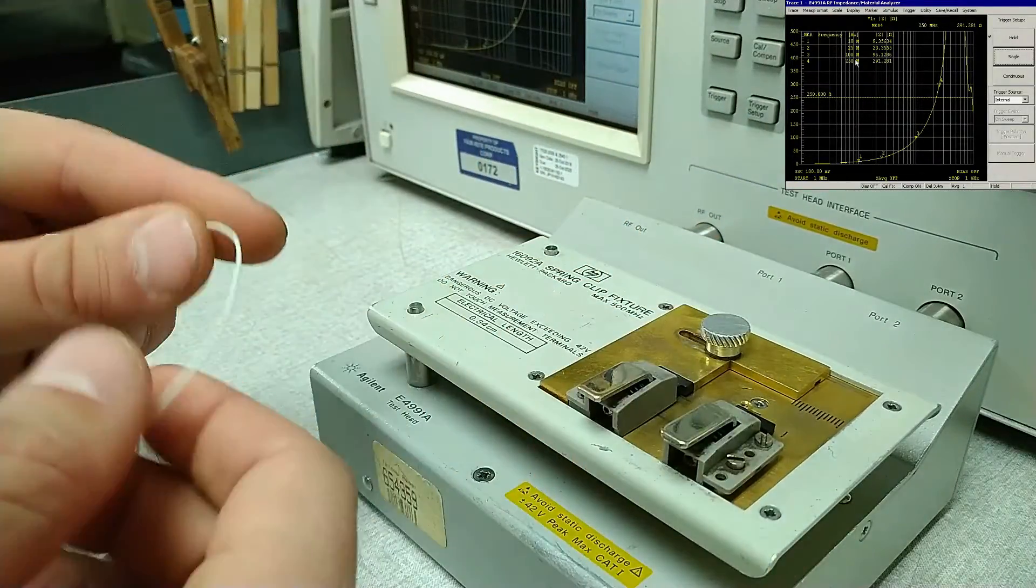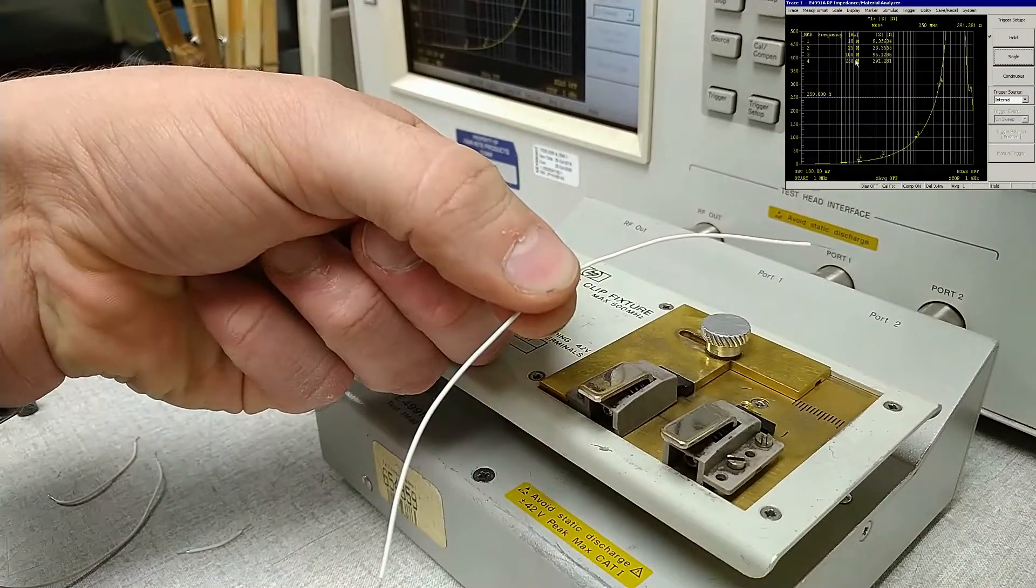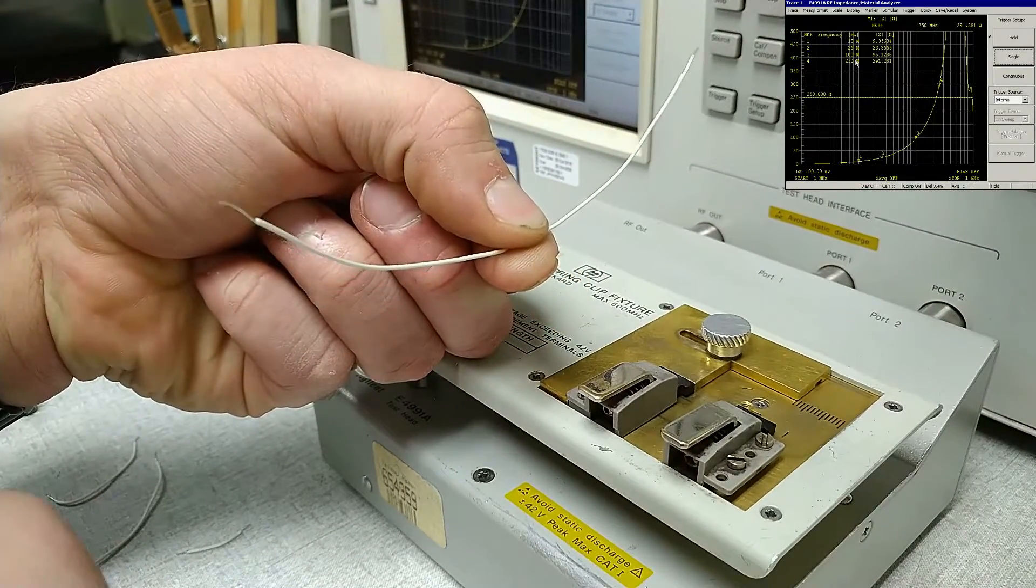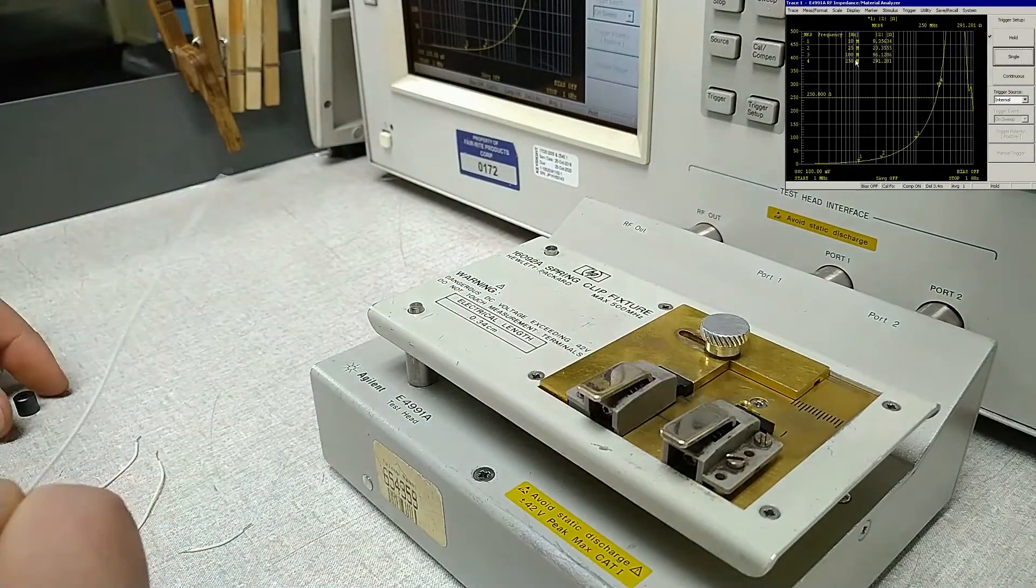So really, if you're looking for more impedance, just get longer wires and traces on your circuit. No ferrite needed. Just kidding.